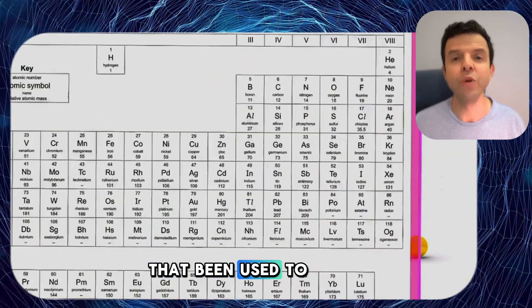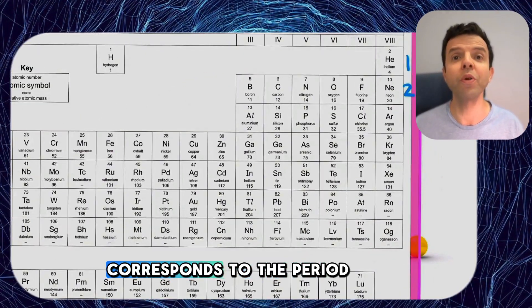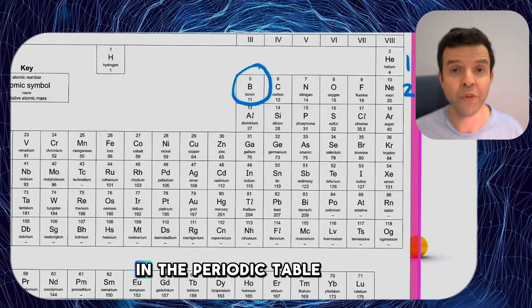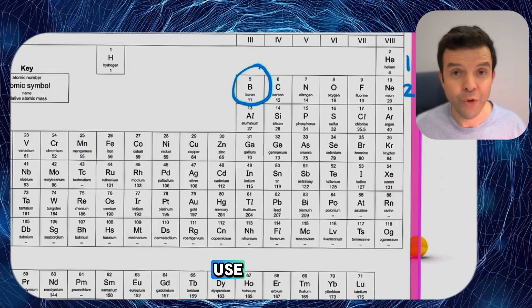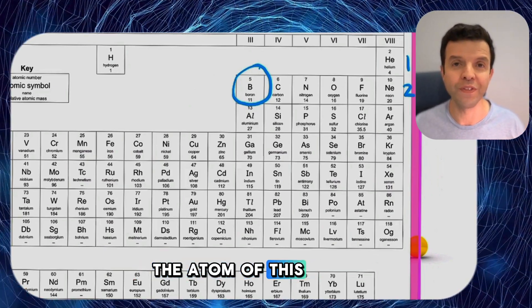The number of shells that have been used to build the atom corresponds to the period where it's found in the periodic table. Boron is found in the second period and that's why we've used two shells to build the atom of this element.